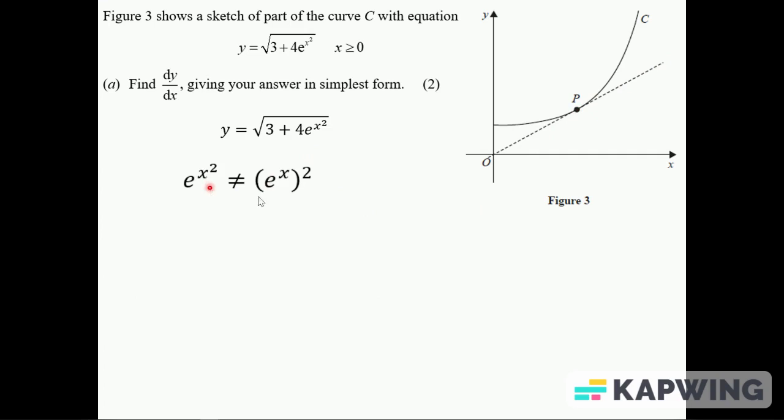A little bit about e to the x squared first. It's not the same as e to the x squared. Some people are getting confused. This would be e to the x times e to the x, which is e to the 2x. If I put 3 in for x here, this would be e to the power of 9. And this would be e cubed times e cubed, which would be e to the power of 6. So they're not the same.